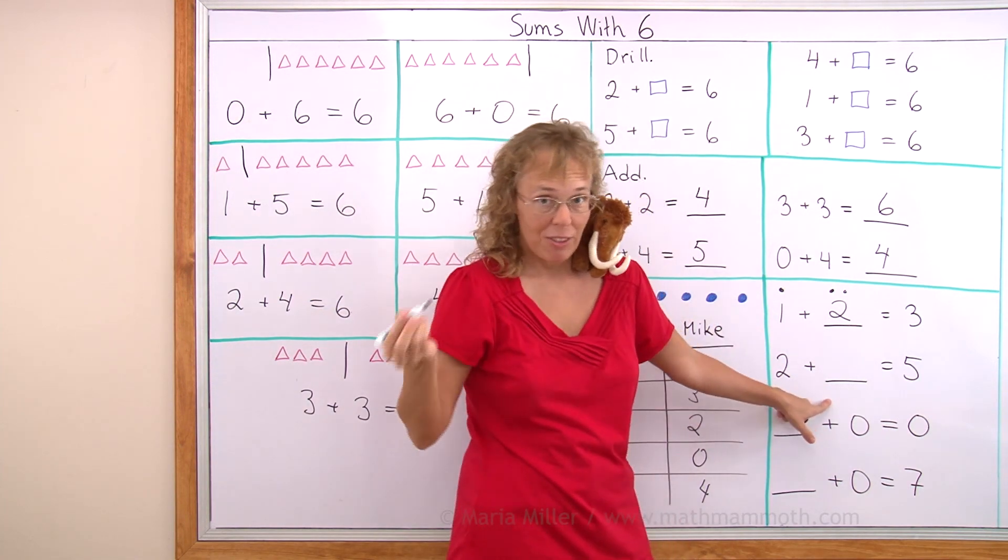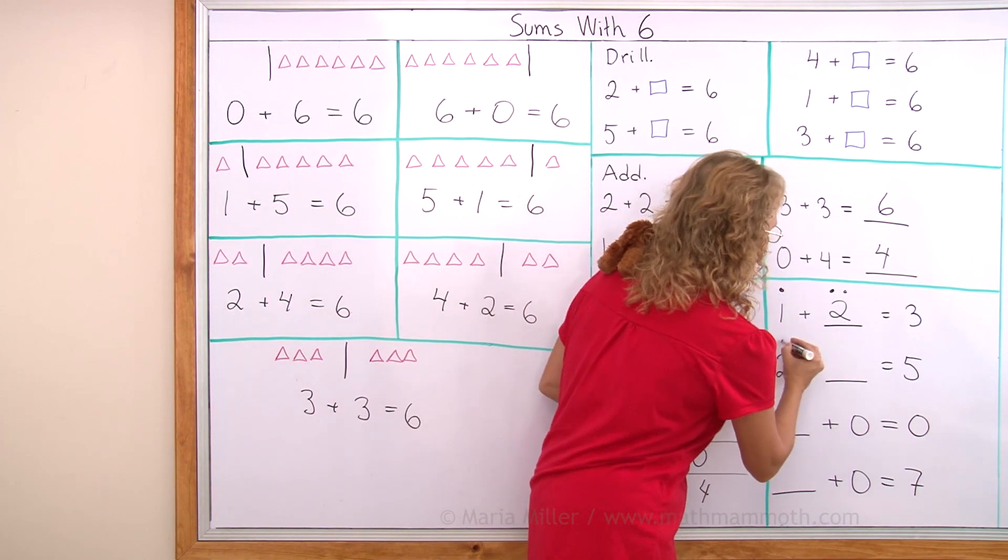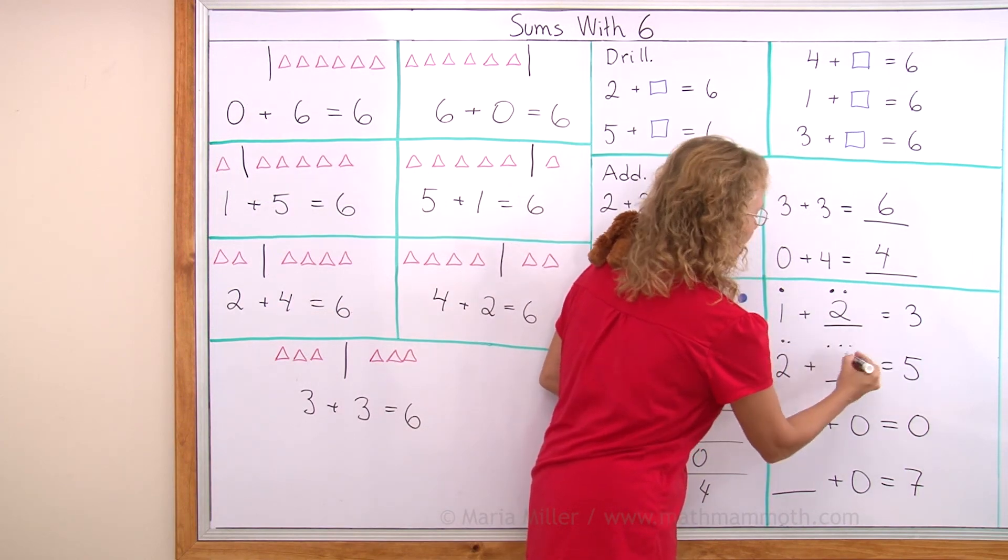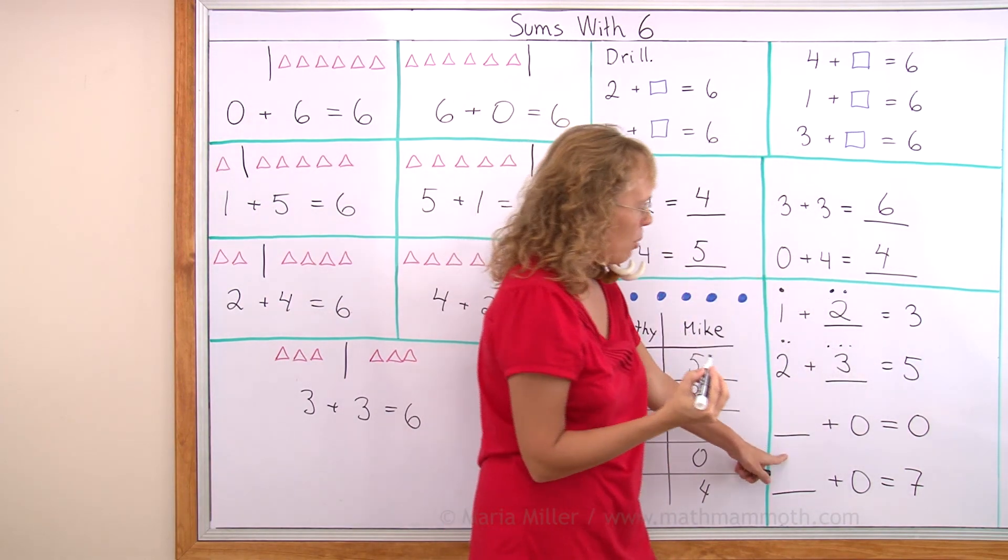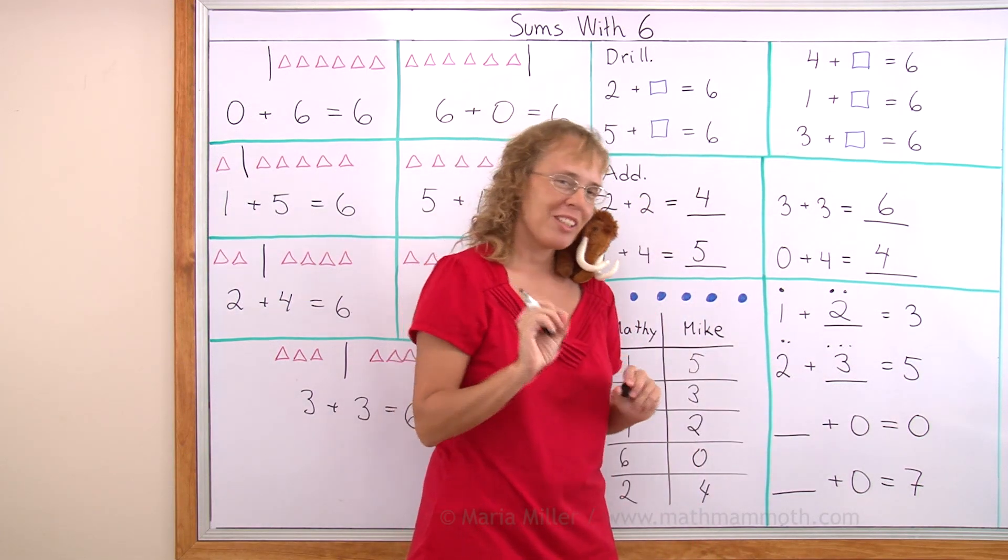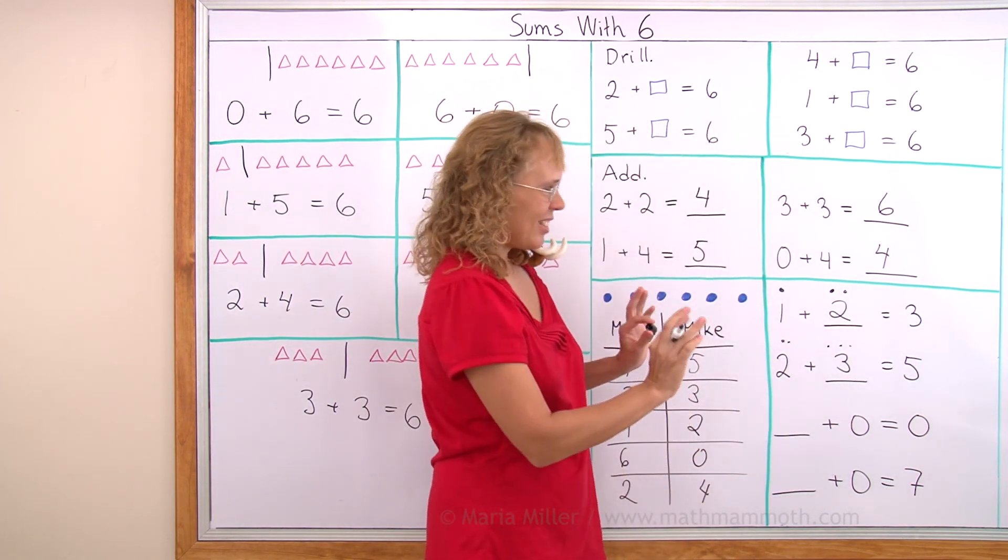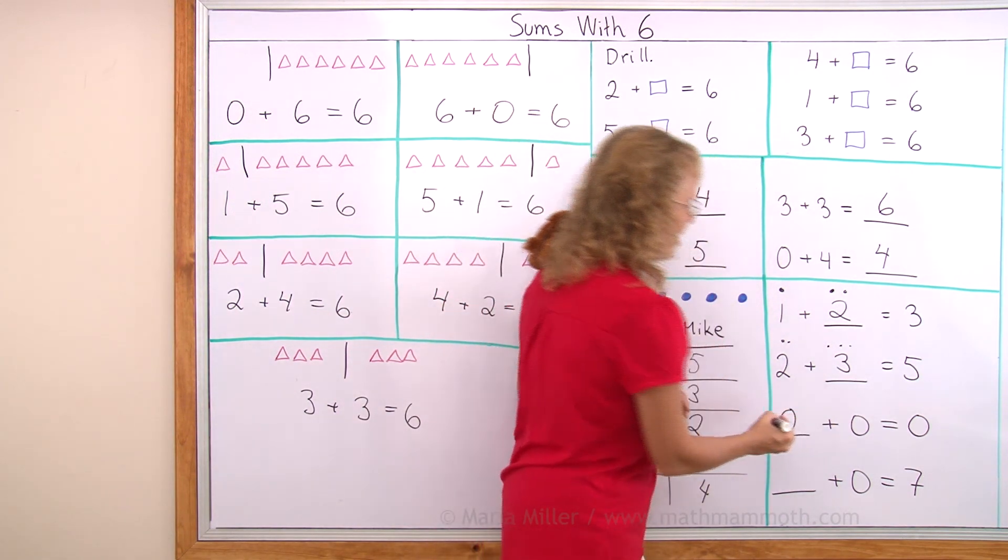Two plus how many more makes five? This is one of the sums with five. Two here and three here. How many plus zero makes zero? That's a tricky problem. Can you solve it? How many plus zero makes zero? The answer is big fat zero. Zero and zero makes zero.